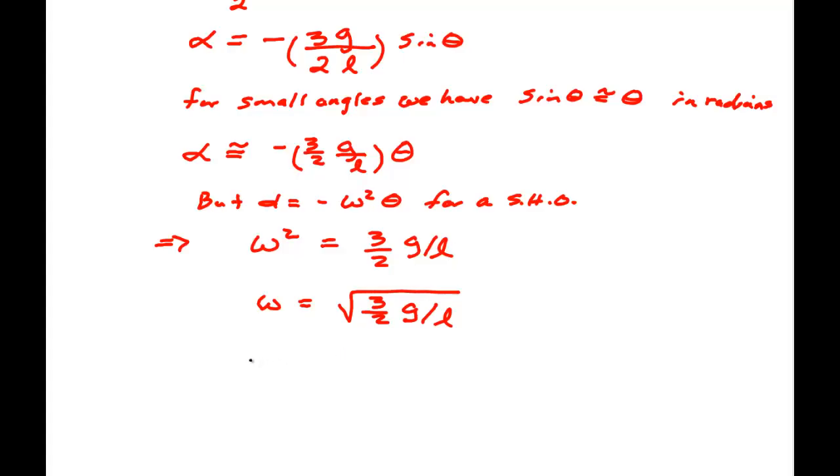We know that if we take the square root of this we get square root of 3/2 G over L. To find the period we have omega times T is equal to 2 pi. This is just saying that sine and cosine is periodic to 2 pi. So T is 2 pi over omega which is 2 pi times the square root of 2L over 3G.